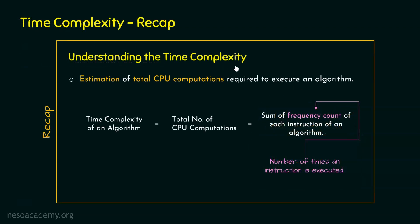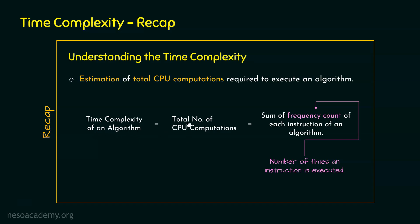We know what time complexity is from our previous lectures. We understood that time complexity is the estimation of total CPU computations required to execute an algorithm. The formula is: time complexity of an algorithm equals the total number of CPU computations. To find the total number of CPU computations, we use the frequency count method — calculating the sum of frequency count of each instruction of an algorithm.